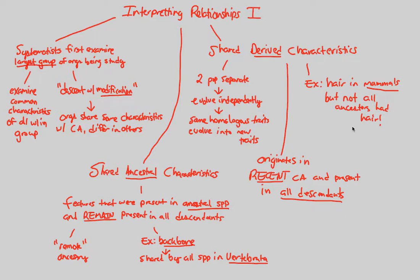Things that came before the mammal — like a reptile — did not have hair. Reptiles do not have hair, but mammals do. There was a divergence that happened; the ancestor was the reptile, which did not have hair, and thus hair is a shared-derived characteristic. All mammals derive their hair from that initial mammal divergence — that initial independent evolution that gave mammals hair. That's our first set of ideas related to interpreting relationships, and we'll continue this discussion in the next flowchart.